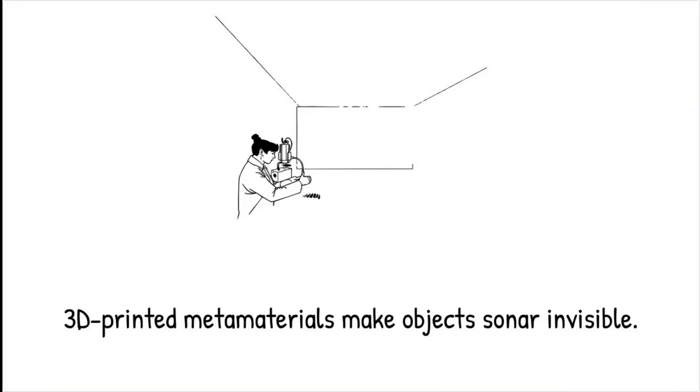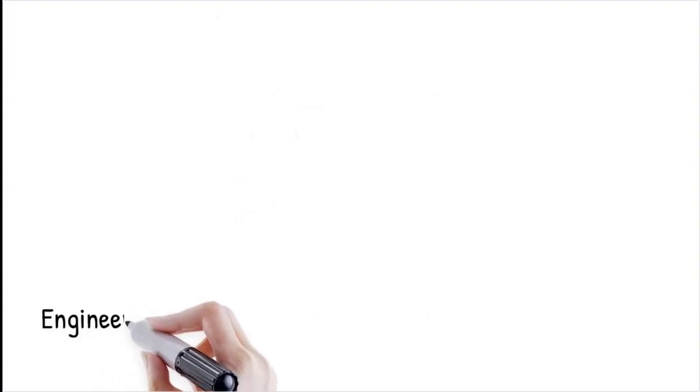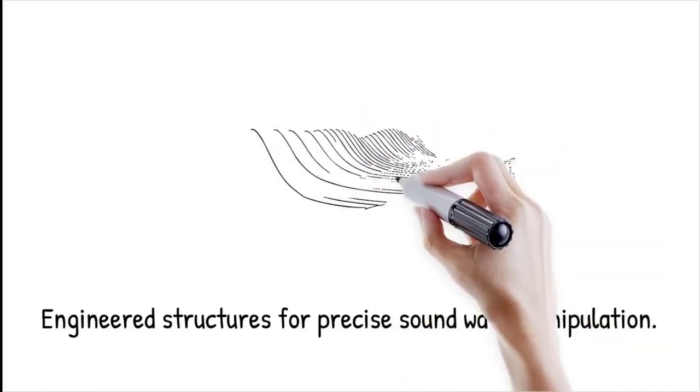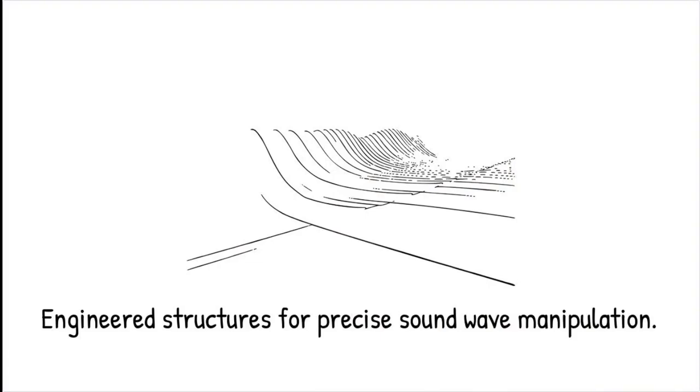Acoustic metamaterials are engineered structures designed to manipulate sound waves at specific frequencies. These materials are composed of artificially structured units smaller than the wavelength of sound, allowing precise control over wave propagation.